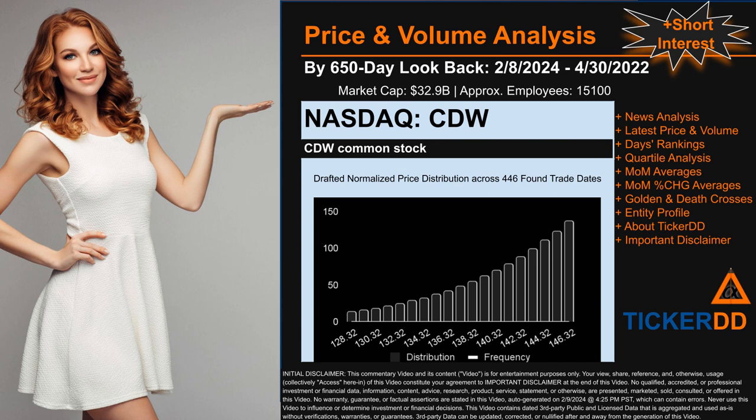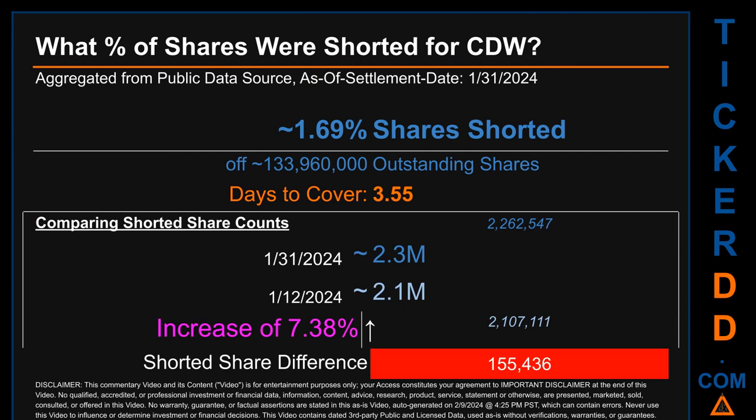What percentage of shares were shorted for CDW? For the two-week period ending on settlement date January 31st, 2024, about 2.3 million shares of CDW were shorted out of a total of approximately 134 million outstanding shares. Therefore, CDW has a short interest of roughly 1.69%, calculated by dividing the number of shorted shares by the number of outstanding shares. Days to cover is 3.55.